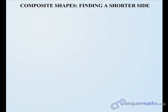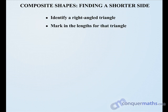In this lesson we do some more work on composite shapes, but this time when finding a shorter side. As before, we need to identify a right-angled triangle—that's our first step—then mark in the lengths for that triangle.